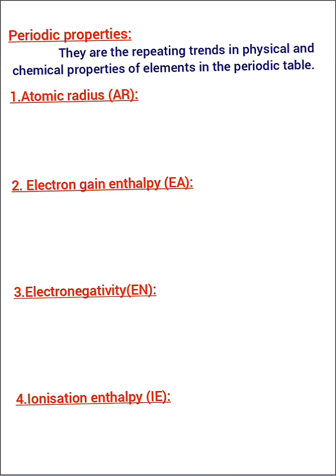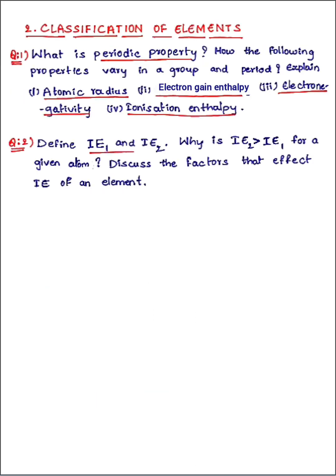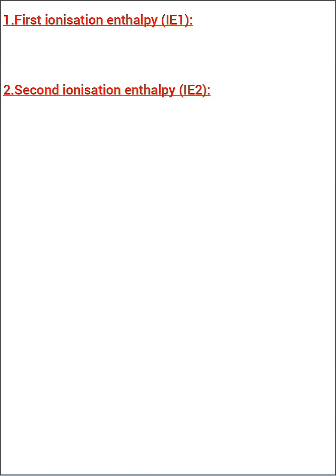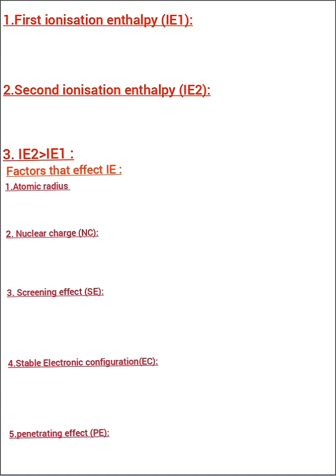The second question is: define IE1 and IE2, why is IE2 greater than IE1 for a given atom, and discuss the factors that affect the ionization enthalpy of an element? Your answer should define first ionization enthalpy (IE1), then second ionization enthalpy (IE2), then give the reason why IE2 is greater than IE1. The factors affecting ionization enthalpy are: atomic radius, nuclear charge, screening effect, stable electronic configuration, and penetrating effect. Under each factor, write its effect on ionization enthalpy.